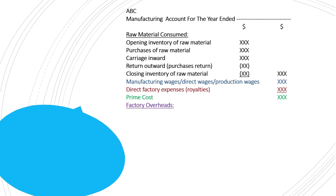After that, we give the heading 'Factory Overheads' or 'Indirect Cost.' Under this heading we record all expenses and costs which are related to the factory but not categorized as a direct cost. The name of expenses may change from question to question, but the basic concept remains the same — all factory-related expenses go under factory overheads, while those directly related to production, like raw material, manufacturing wages, and direct factory expenses, are recorded as part of prime cost.